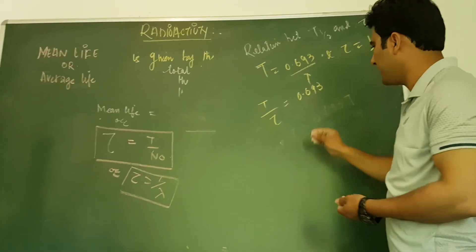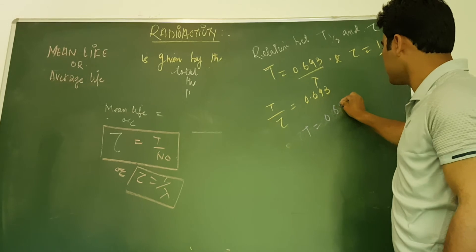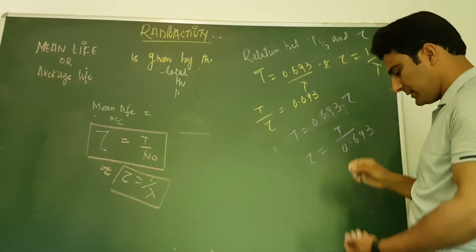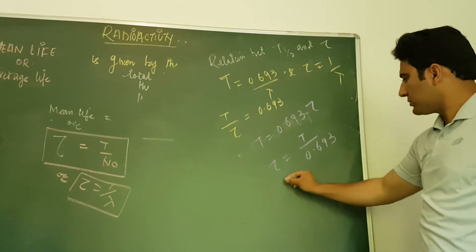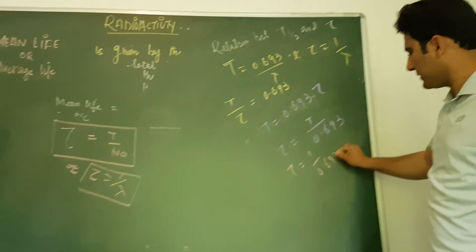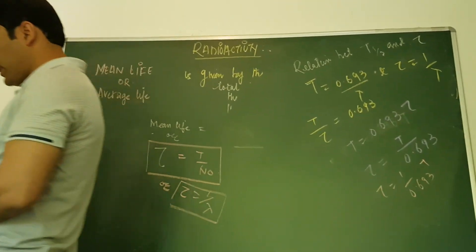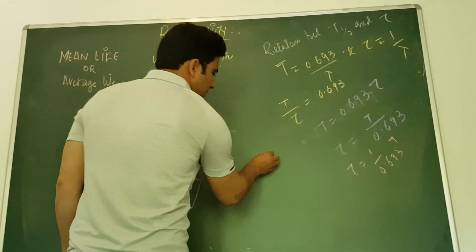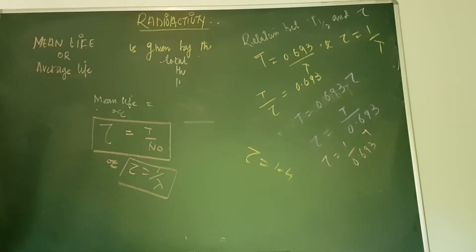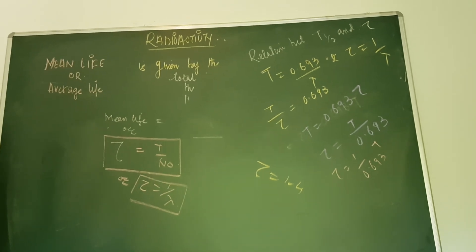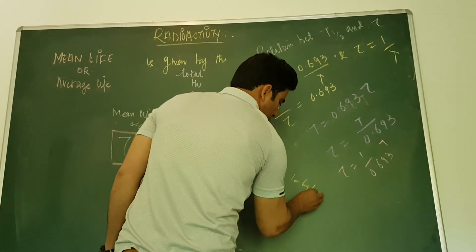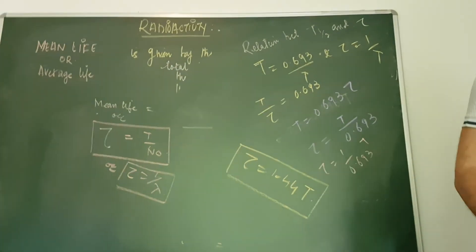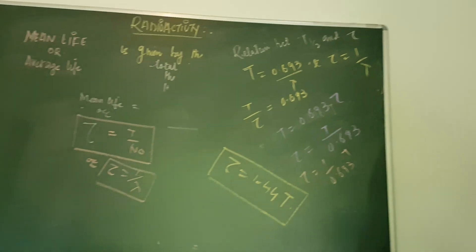So tau is equal to 1 divided by 0.693 into T½, and this equals 1.44 of T½. Therefore, tau equals 1.44 of T½. This is the relation between average life and half-life of a radioactive substance, and you have to remember it. Note it down.